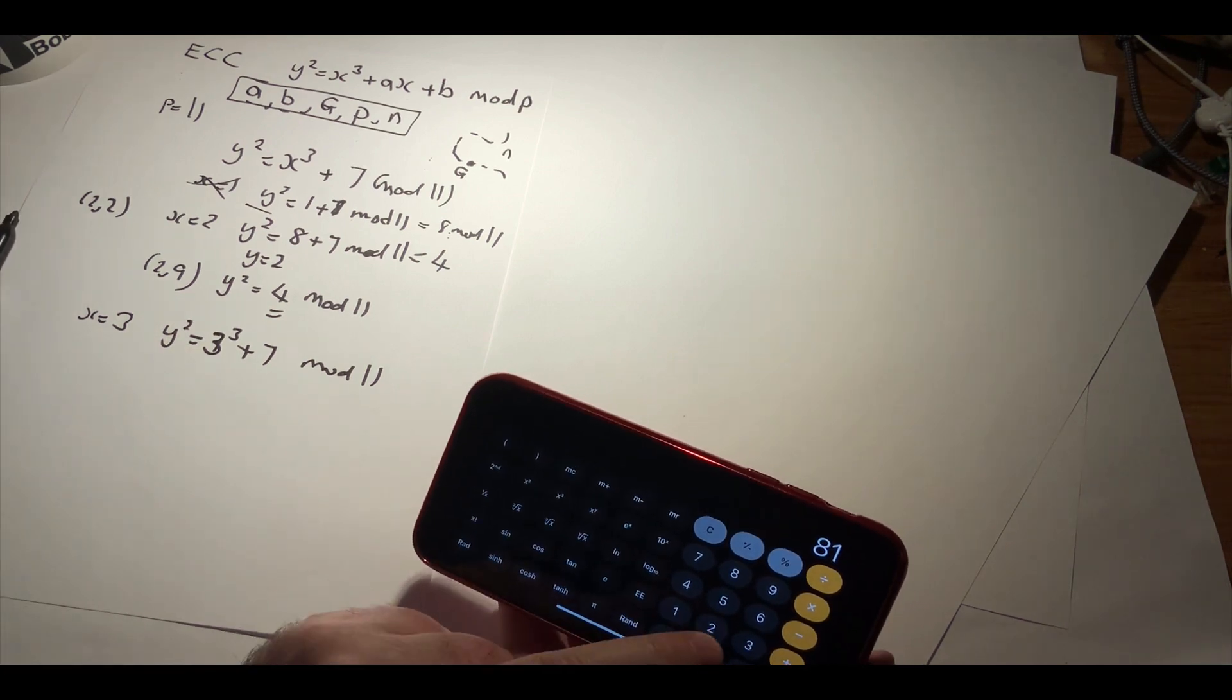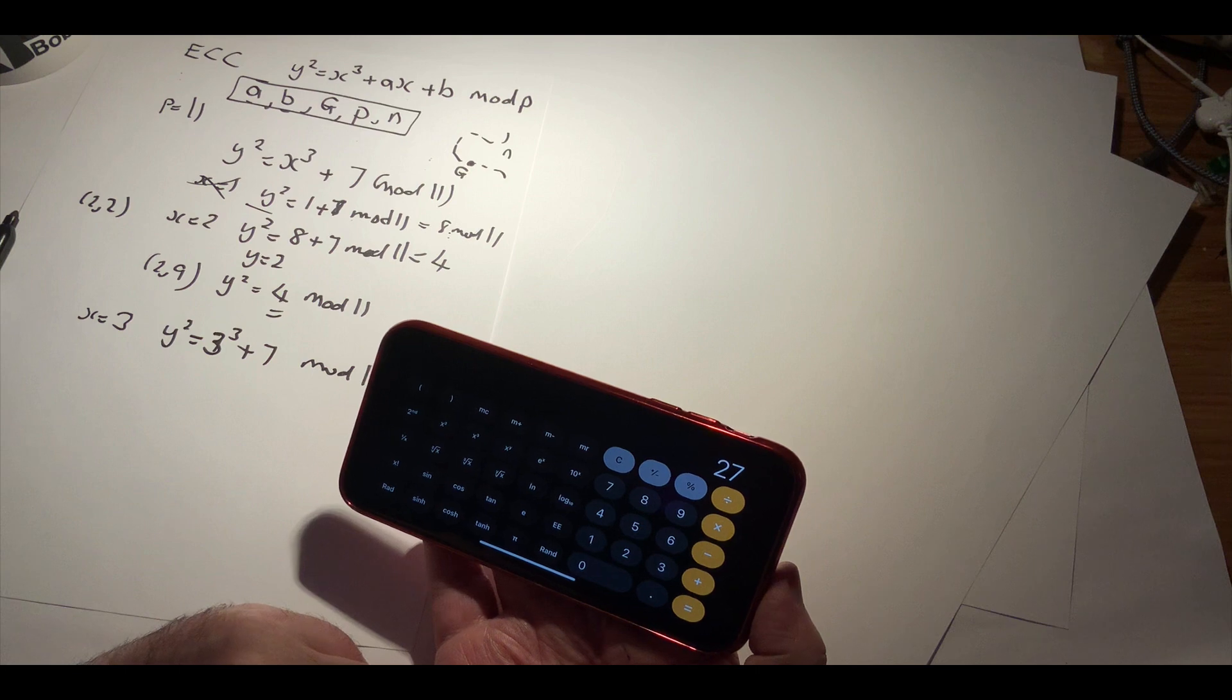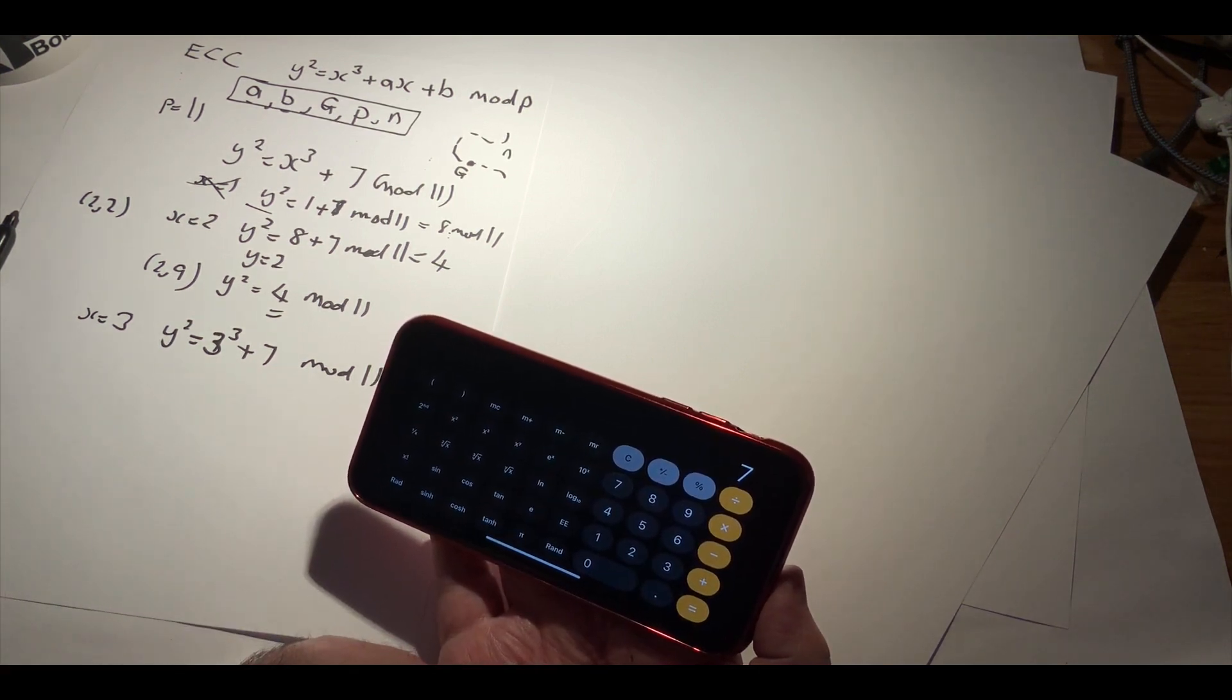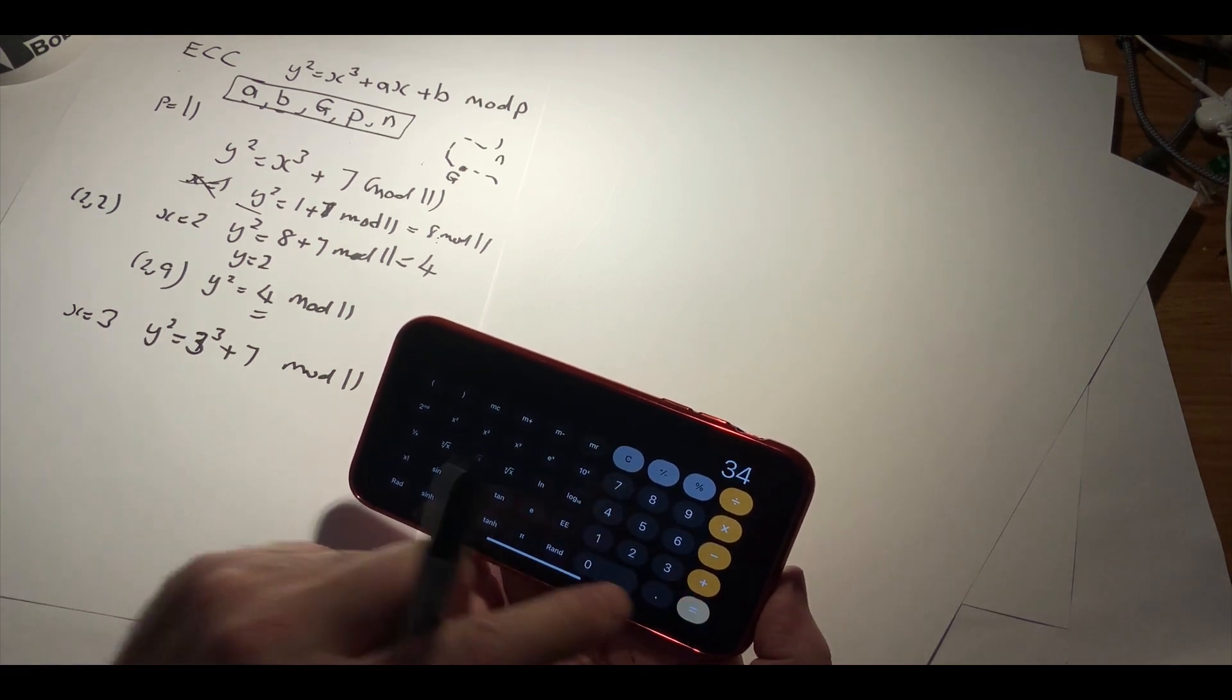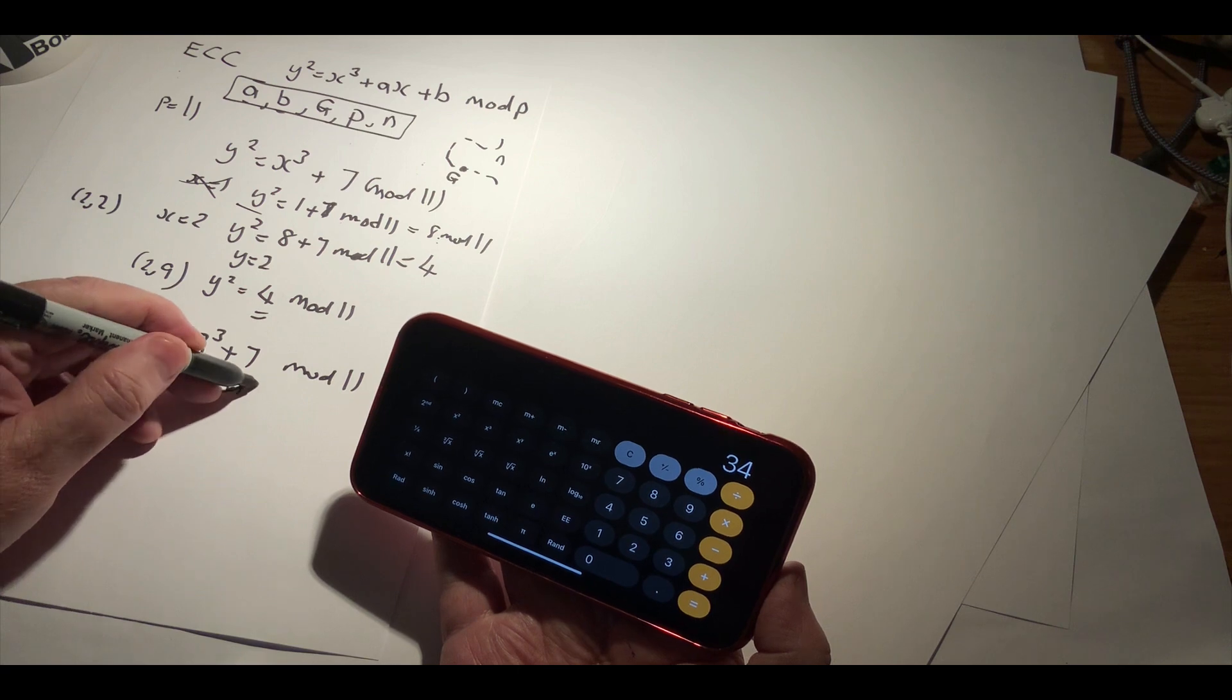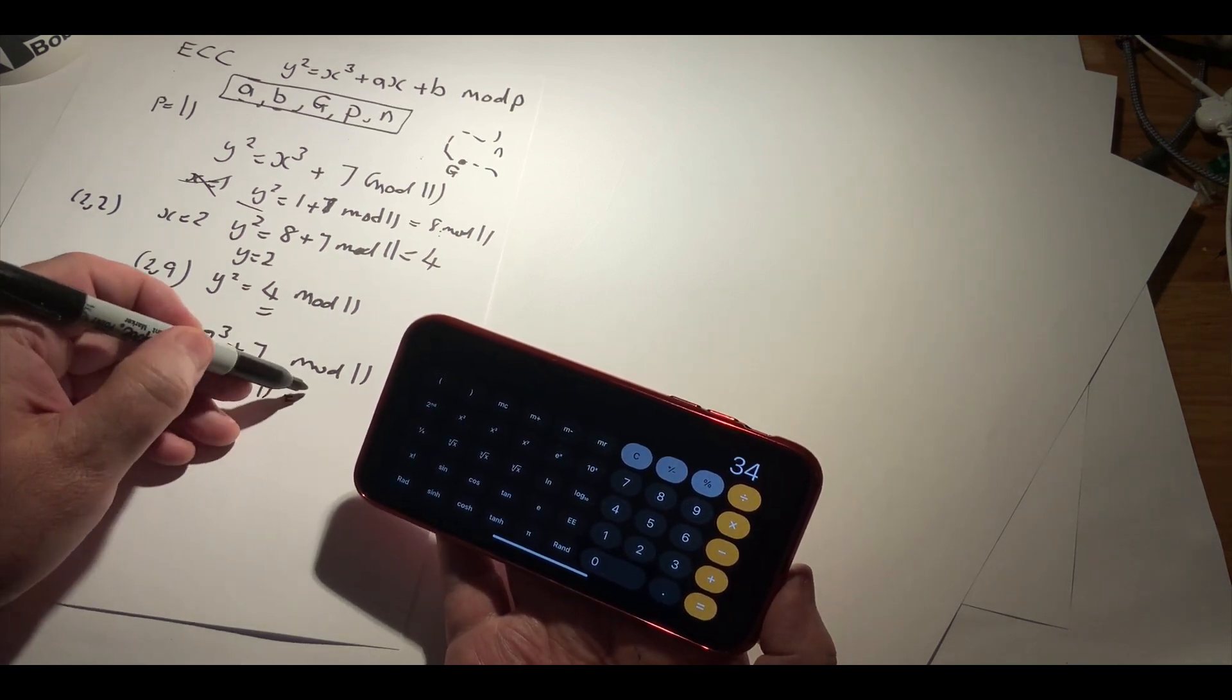3 cubed plus 7 mod 11. We've got 3 cubed plus 7 is 34 mod 11, so we can see that that equals 1.